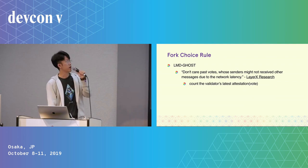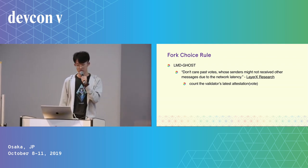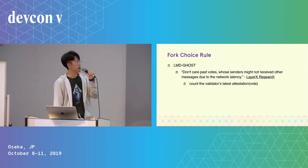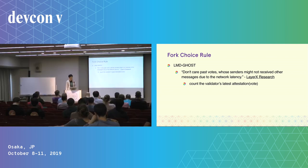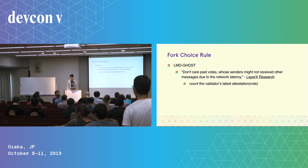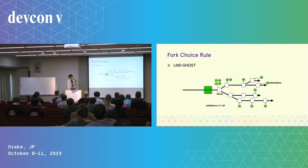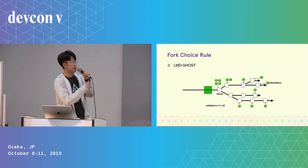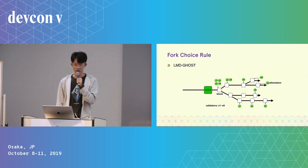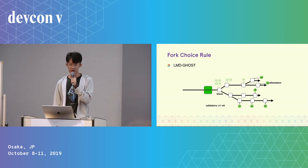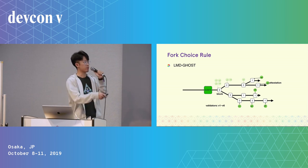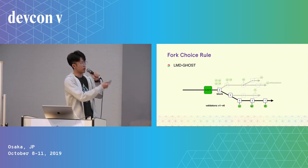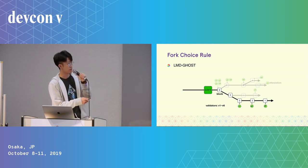How does LMD GHOST work? A post on ETH research summarized it well: you discard old votes whose sender might not have received other messages due to network latency. In short, we only count each validator's latest vote. Say there are six validators — these are the votes they cast. Since in LMD GHOST we only count the latest vote, this changes the vote count, giving us a different score, and applying the same choosing rule we get a different winning chain.